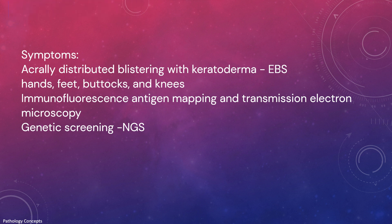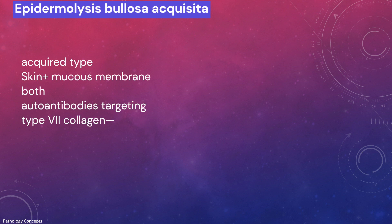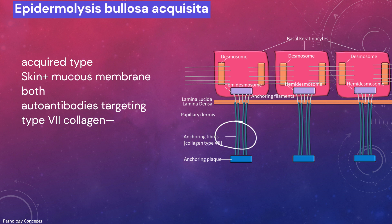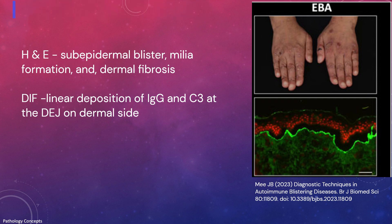Epidermolysis bullosa acquisita also shows sub-epidermal blister. It is an acquired type of disease where both skin and mucous membrane are involved. There are autoantibodies against type 7 collagen, a crucial component of anchoring fibrils within the dermo-epidermal junction connecting the papillary dermis to the lamina densa. On H&E there is a sub-epidermal blister; milia formation and dermal fibrosis can be seen. On DIF, there is a linear deposition of IgG and C3 at the dermo-epidermal junction on the dermal site.